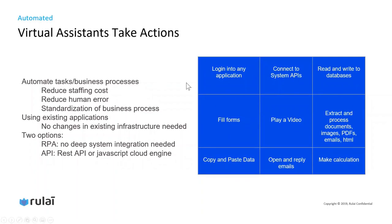This can be achieved by combining conversational AI with robotic process automation (RPA) or API calls. With that, a virtual assistant can log in to any application, fill forms automatically, copy and paste data, connect to system APIs, play video, open and reply to emails, read and write databases, extract and process documents, images, PDFs, emails, and HTML, or make calculations. With that, the virtual assistant can reduce staff cost, reduce human error, and standardize business processes. And you can use existing enterprise applications without changing existing infrastructure.